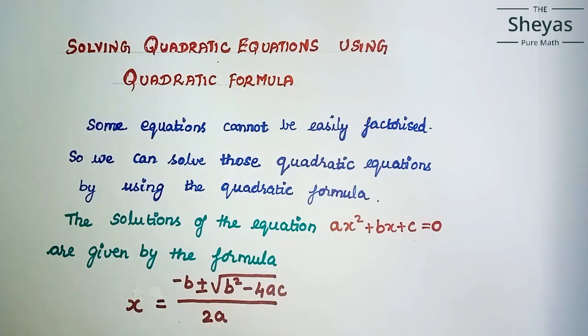What is the quadratic formula? x equals minus b plus or minus root of b squared minus 4ac, all over 2a. This is your quadratic equation, and the solution for this is x equals minus b plus or minus root of b squared minus 4ac by 2a.